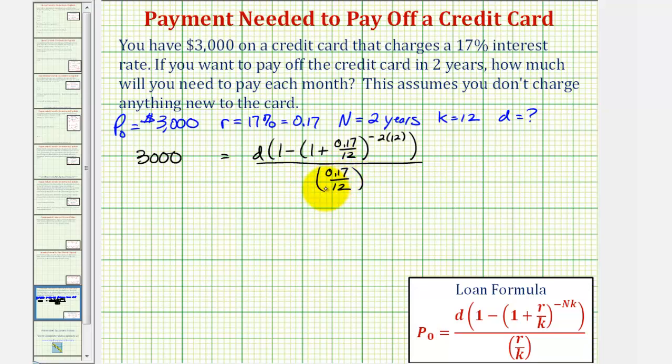Let's begin by clearing this fraction here by multiplying both sides of the equation by 0.17 divided by 12. If it's helpful, we can think of this as being over one, therefore this simplifies to one. So we have 3,000 times 0.17 over 12 equals, on the right we have D times the quantity one minus the quantity one plus 0.17 divided by 12, raised to the power of negative 24.